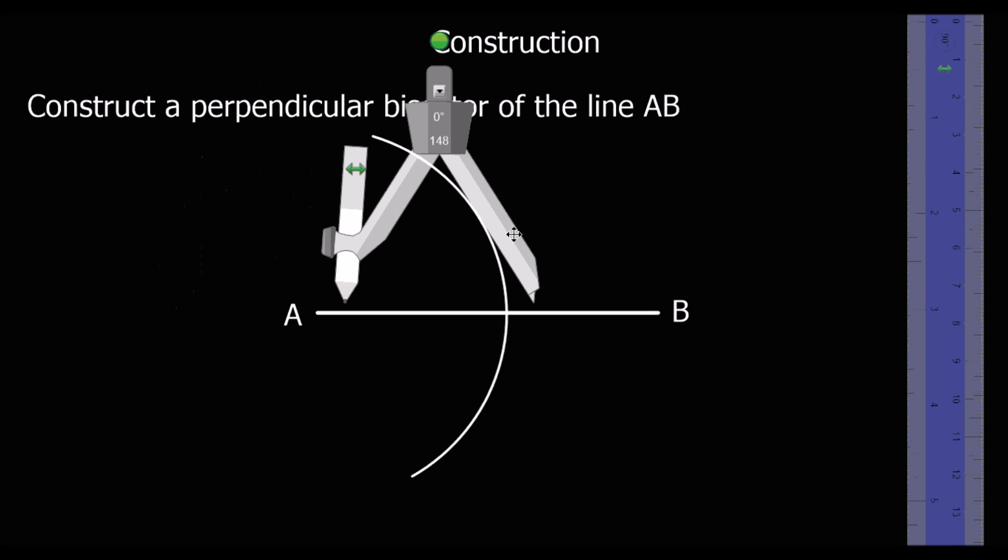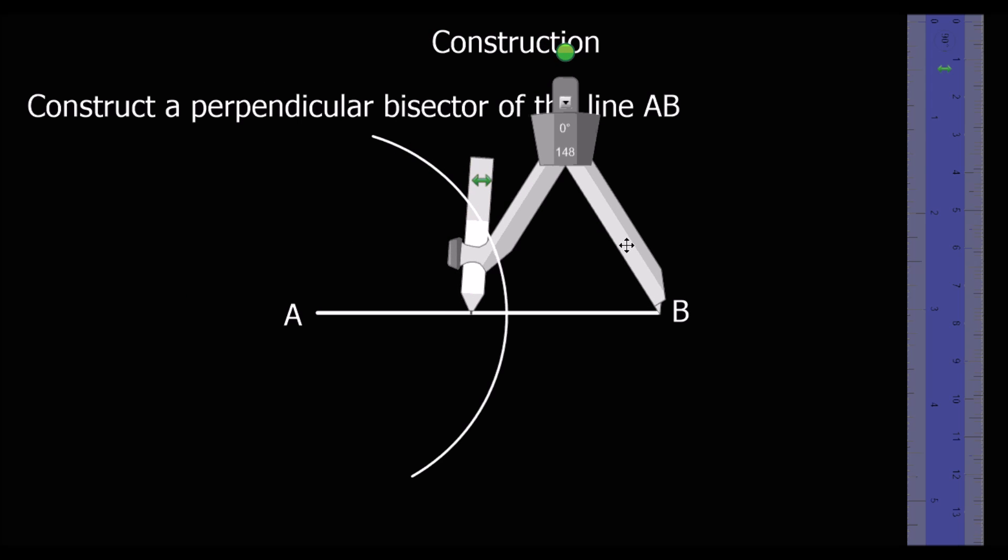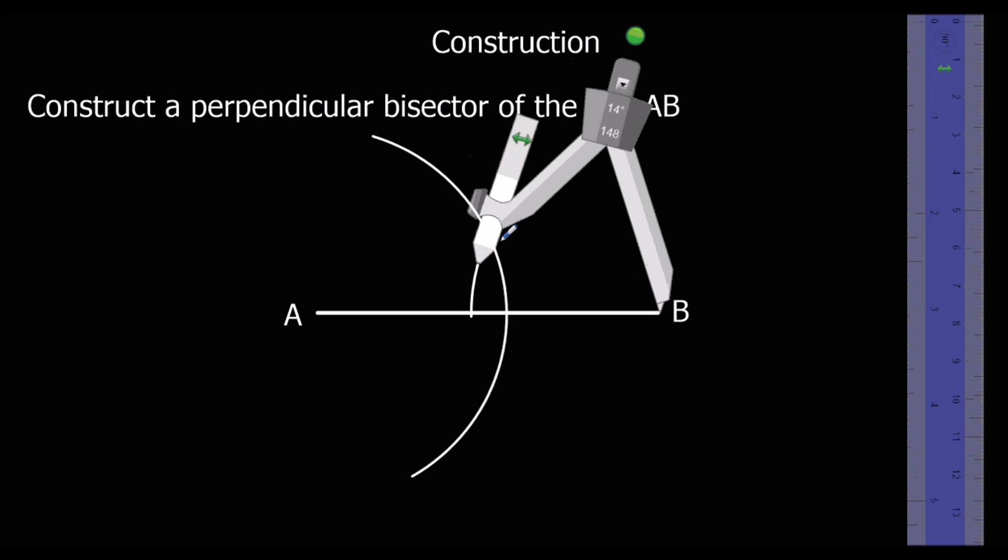Then we switch it around and we put it on point B instead. Put it on the end of the line. I think that's close enough. And then we draw again.